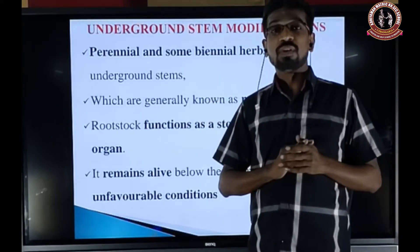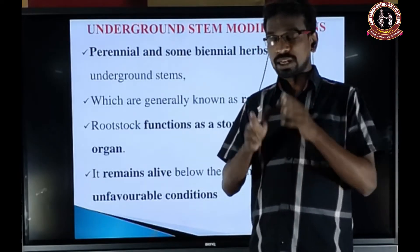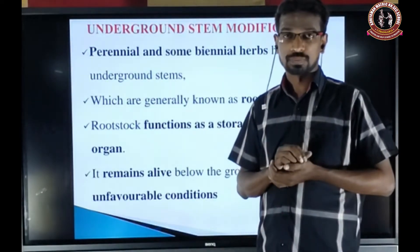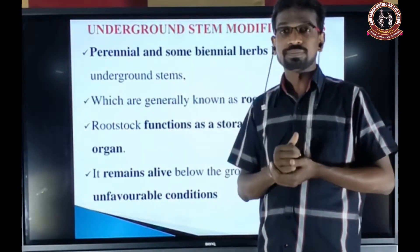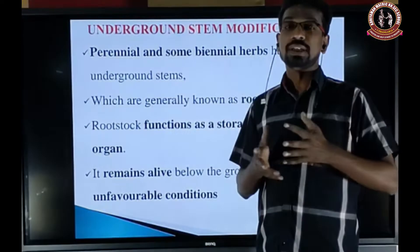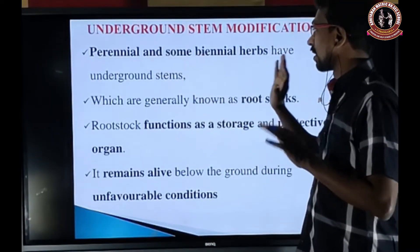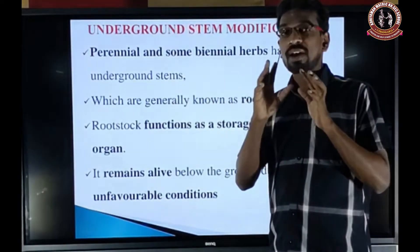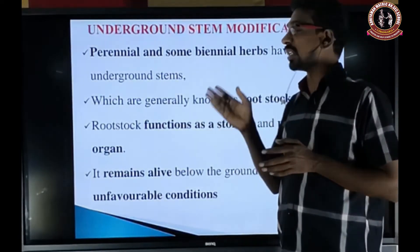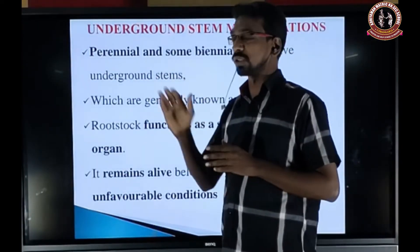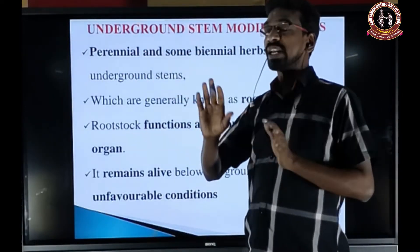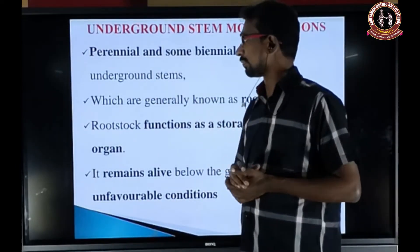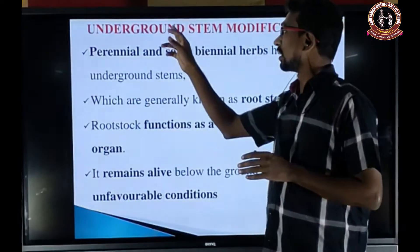Biennial plants live for two years or two seasons. In the first year or season the plant grows vegetatively, and during the second year or season they grow reproductively. Perennial and some biennial herbs — small plants with very soft stem — have the underground stem. This group of plants has underground stems generally known as root stalks.